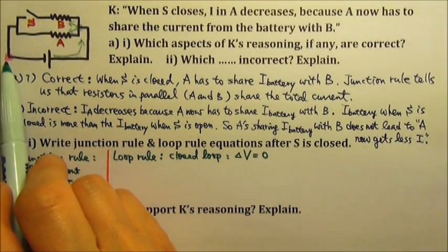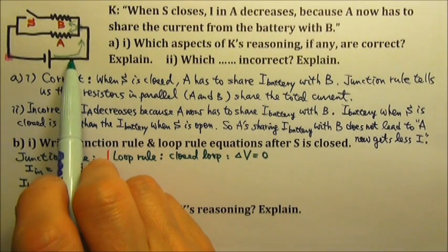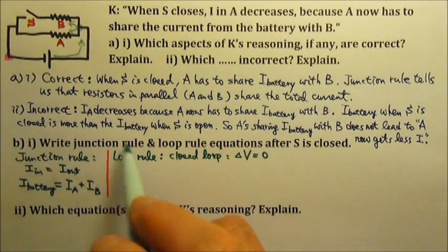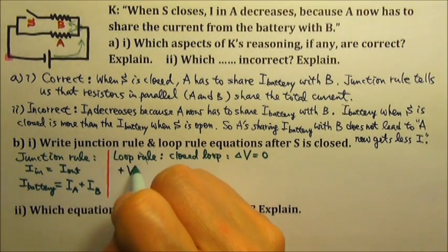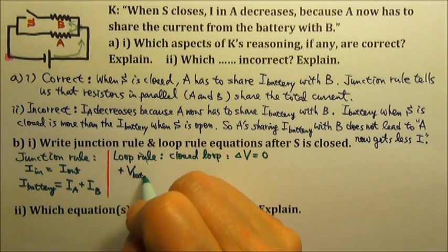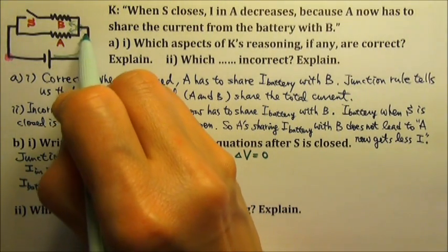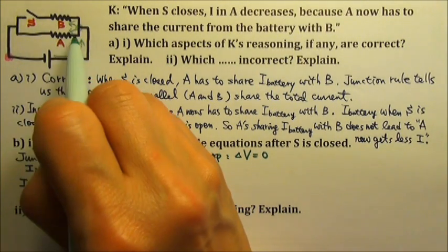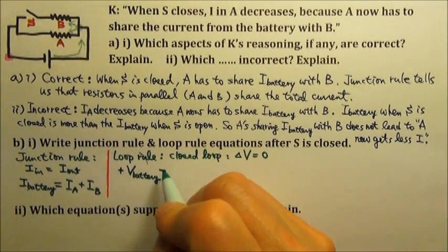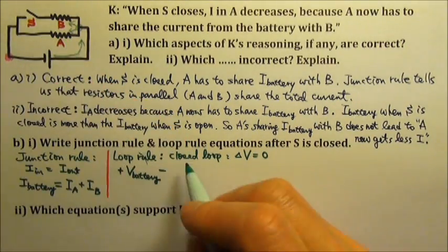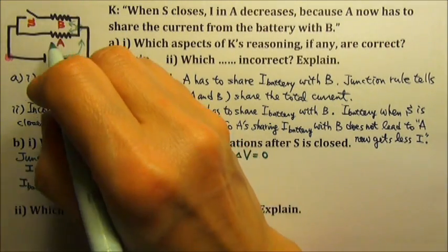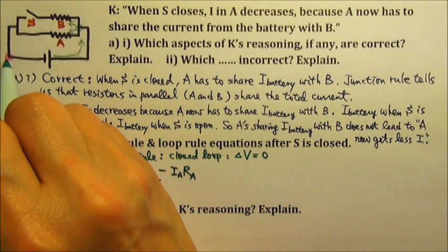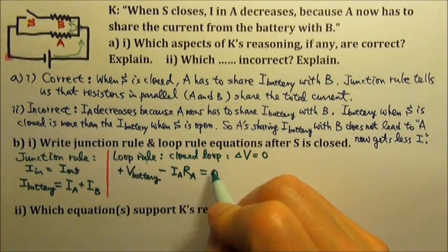For the lower loop, I'll start here and follow the current. First, I go across the battery from the negative terminal to the positive terminal, so the potential increases by the battery voltage. Then I follow the current and go across the resistor — the potential decreases by I times R, which is IA times RA. Then I'm back to the starting point, so delta V equals zero.